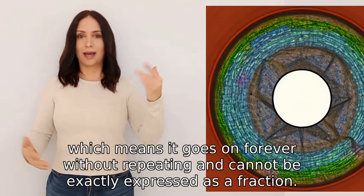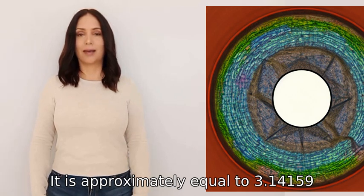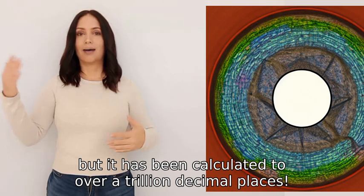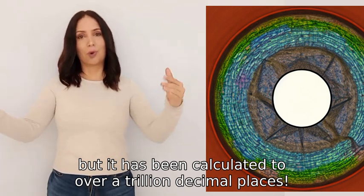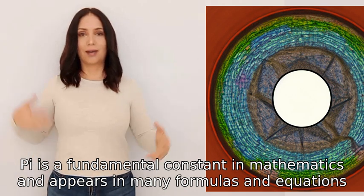cannot be exactly expressed as a fraction. It is approximately equal to 3.14159, but it has been calculated to over a trillion decimal places. Pi is a fundamental constant in mathematics and appears